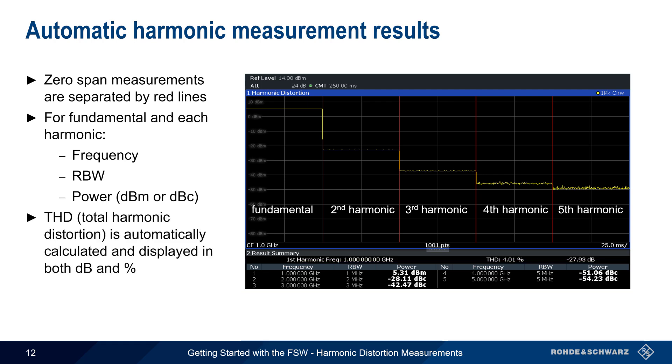In addition, total harmonic distortion, or THD, is automatically calculated for the measured harmonics and is given both as a percentage and in dB.